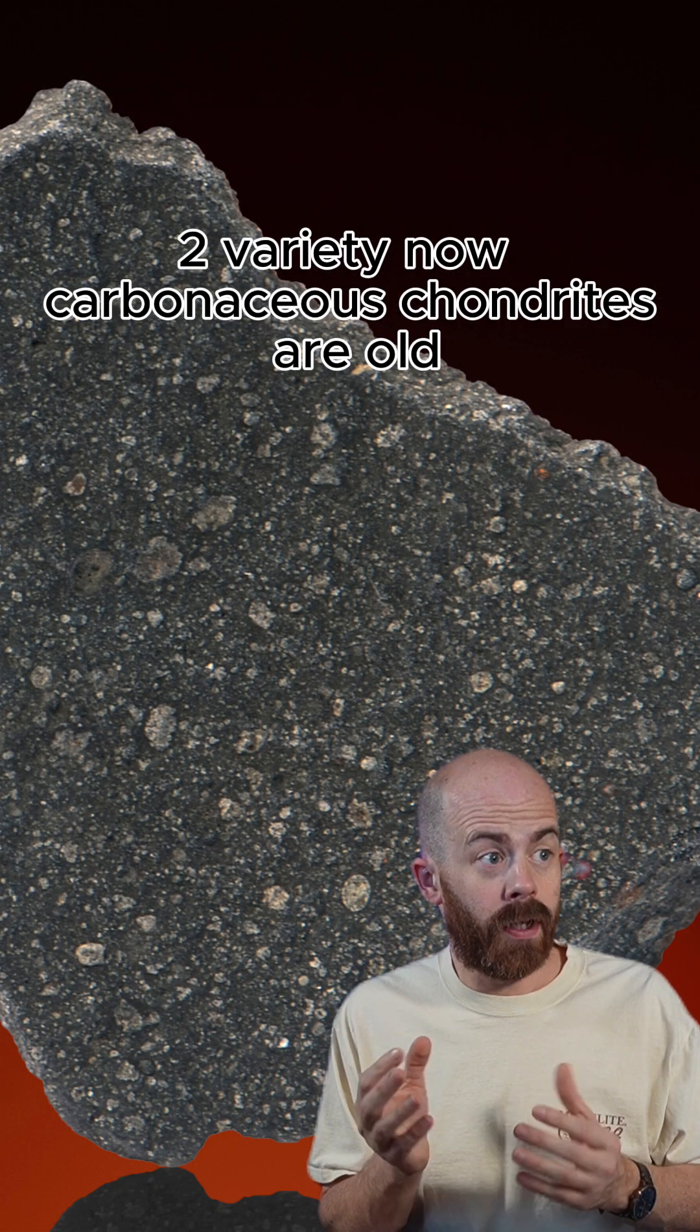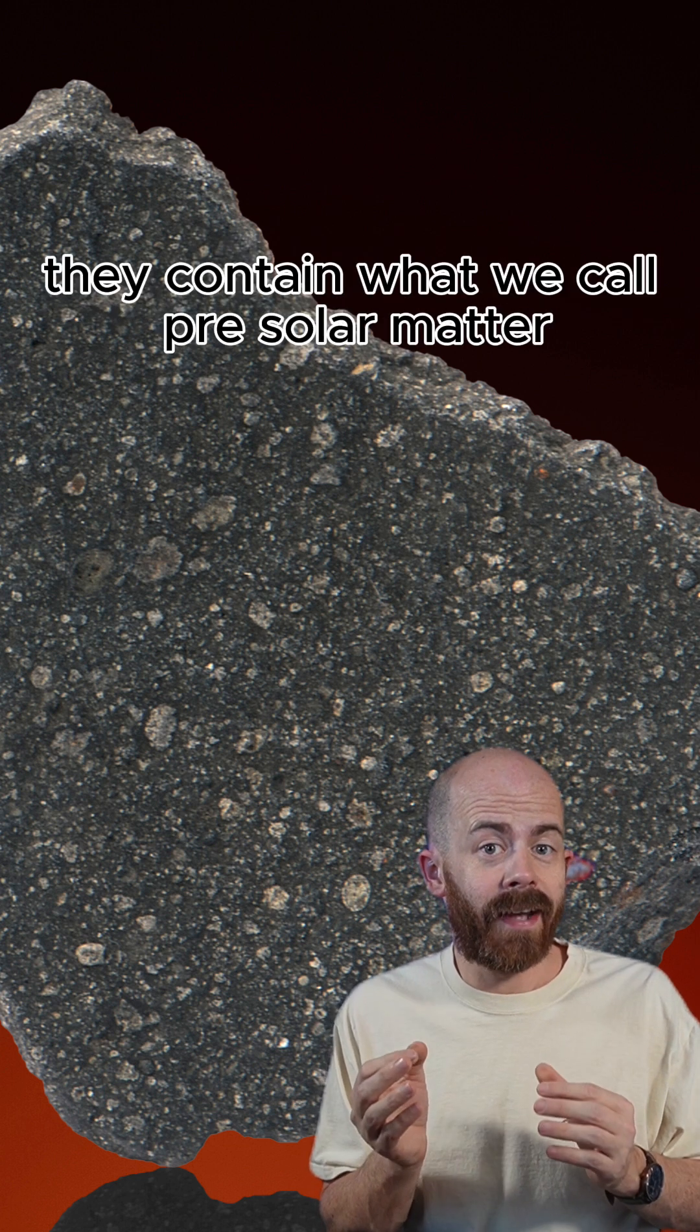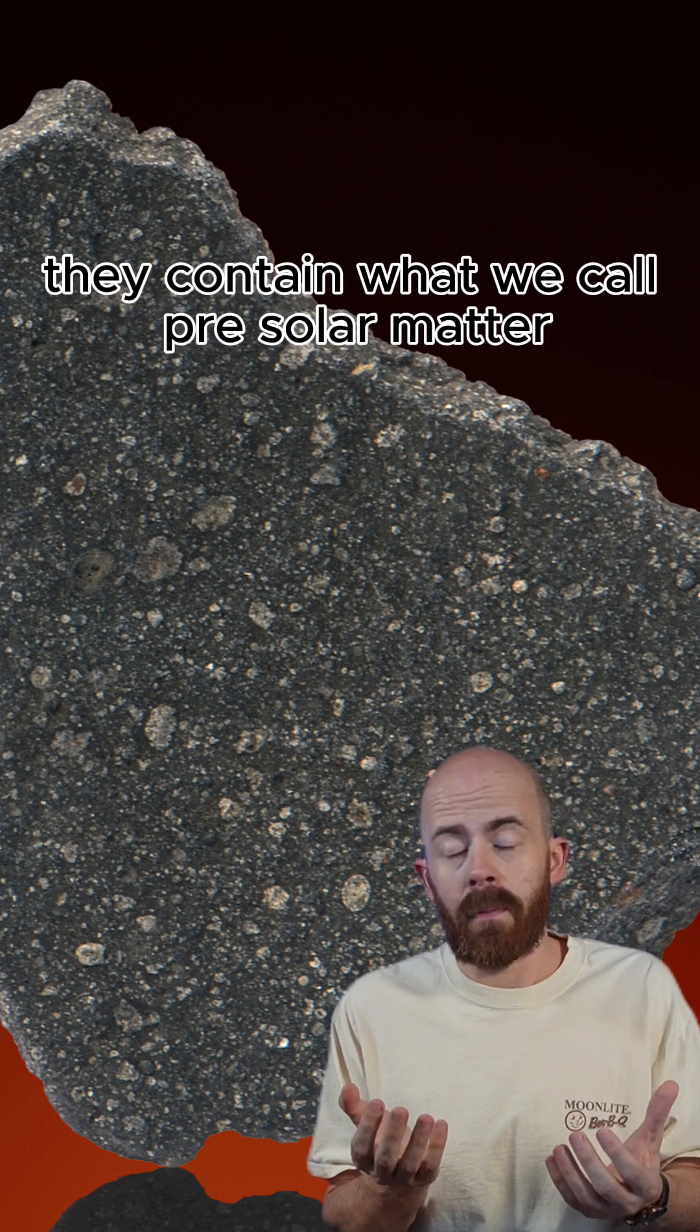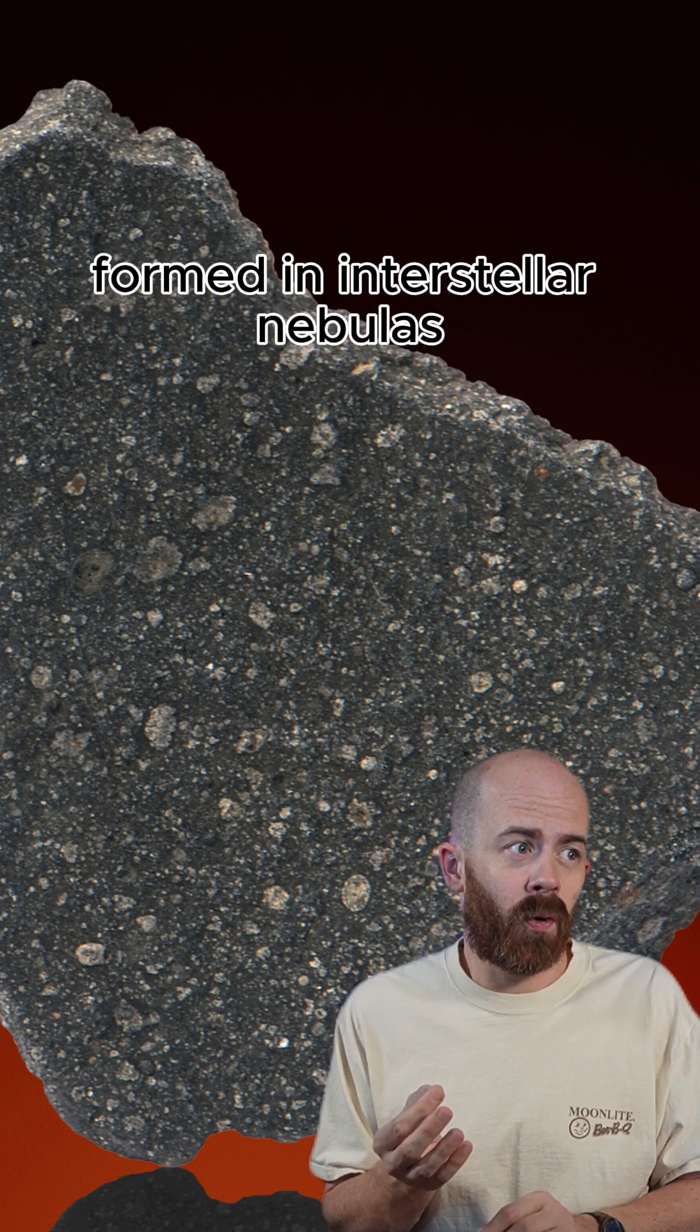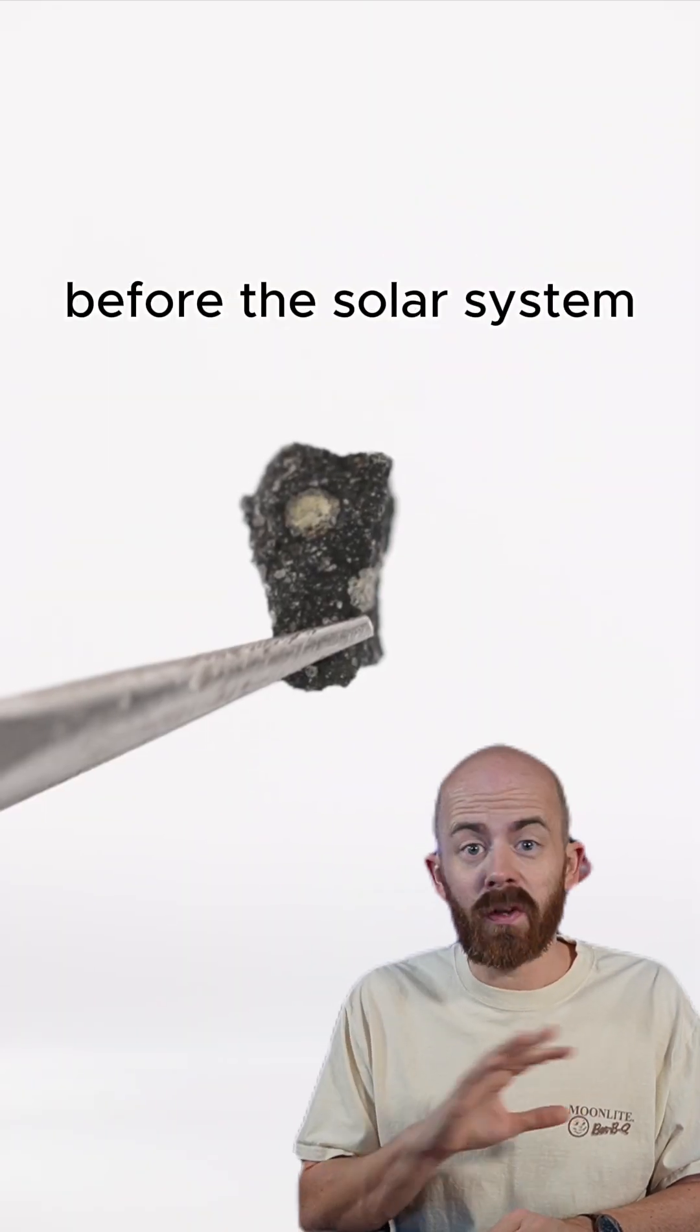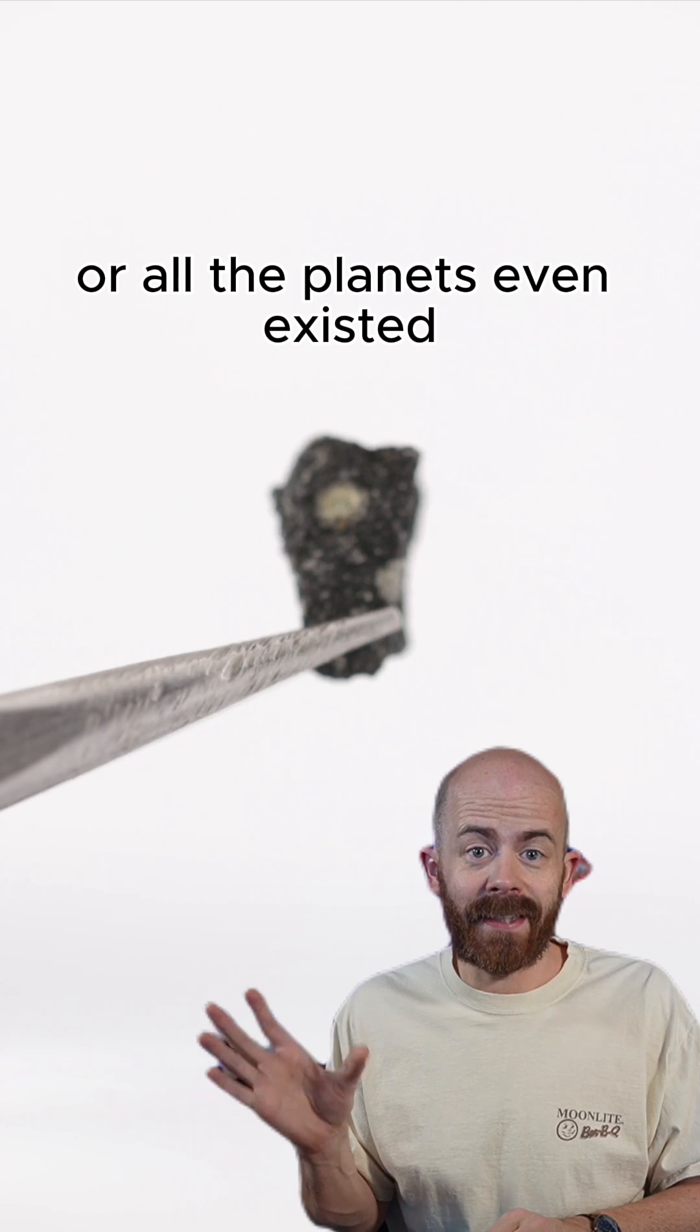Now, carbonaceous chondrites are old, like really, really old. They contain what we call pre-solar matter. And we don't know the full story, but it's believed that these meteorites may have formed in interstellar nebulas before the solar system or all the planets even existed.